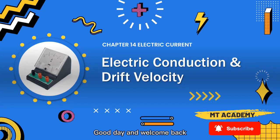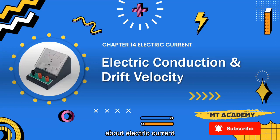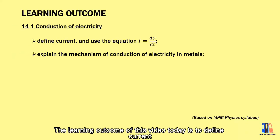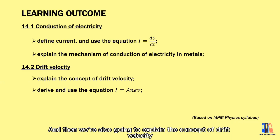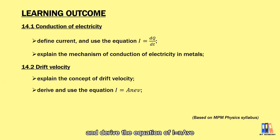Good day and welcome back. We are going to enter the third chapter which is about electric current. The learning outcomes of this video are to define current, explain the mechanism of electricity conduction, explain the concept of drift velocity, and derive the equation I equal to nAvE.